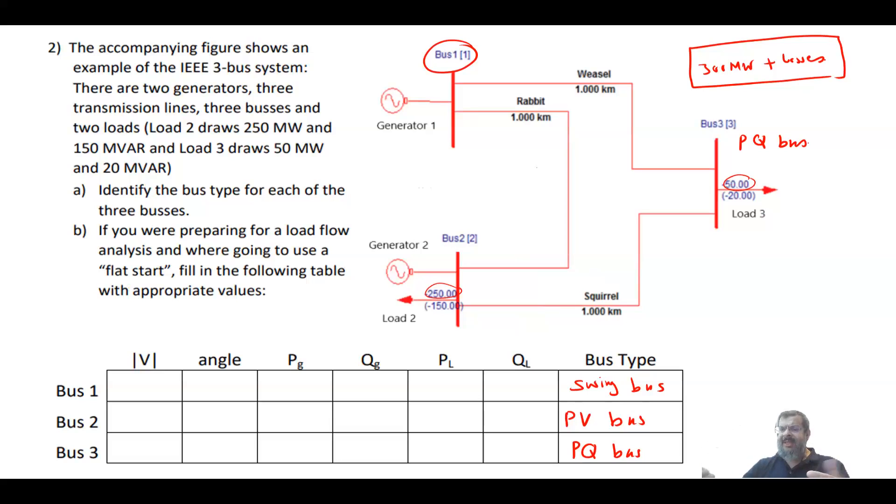This is the pre-power flow problem. We want to fill in the following table to start with the flat start. Let's start with the first bus, the swing bus. In the swing bus, we know the voltage magnitude and we know the angle. This is usually magnitude of one per unit and the angle is basically zero. The PG and the QG we don't know, we calculate them at the end of the iteration.